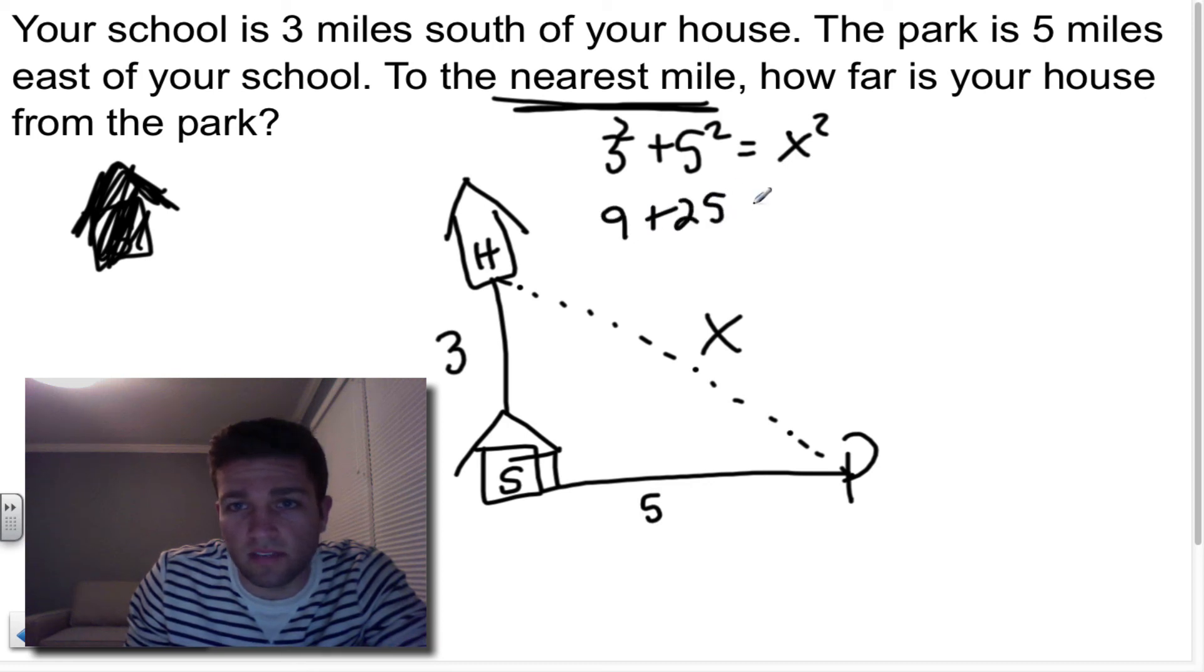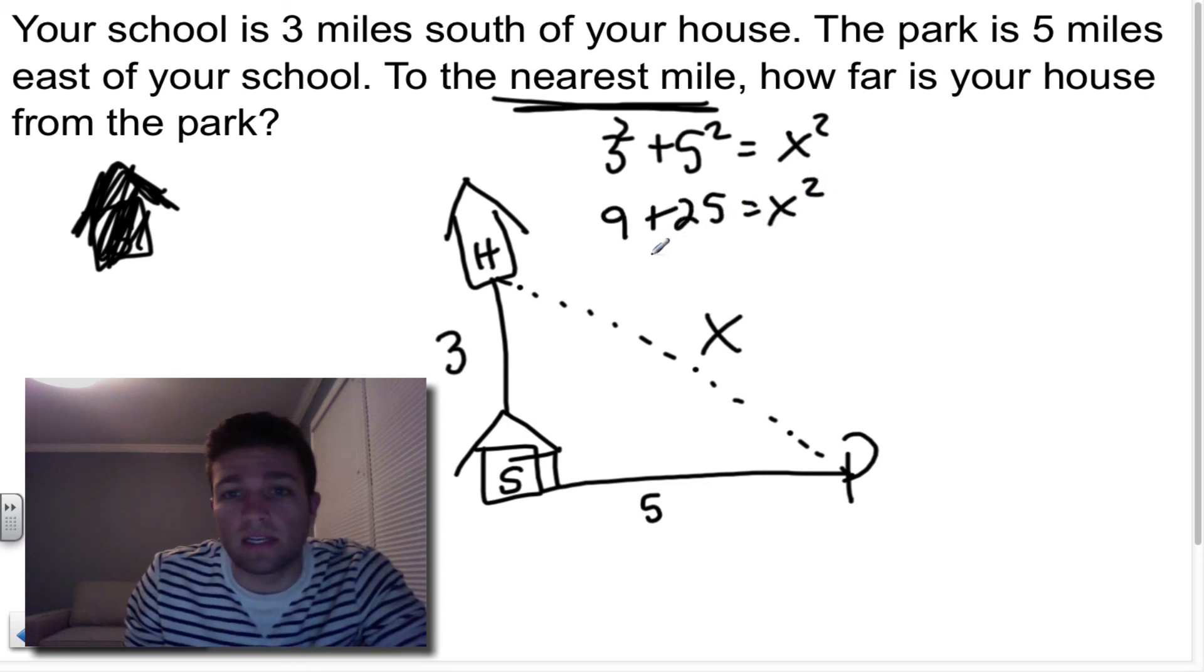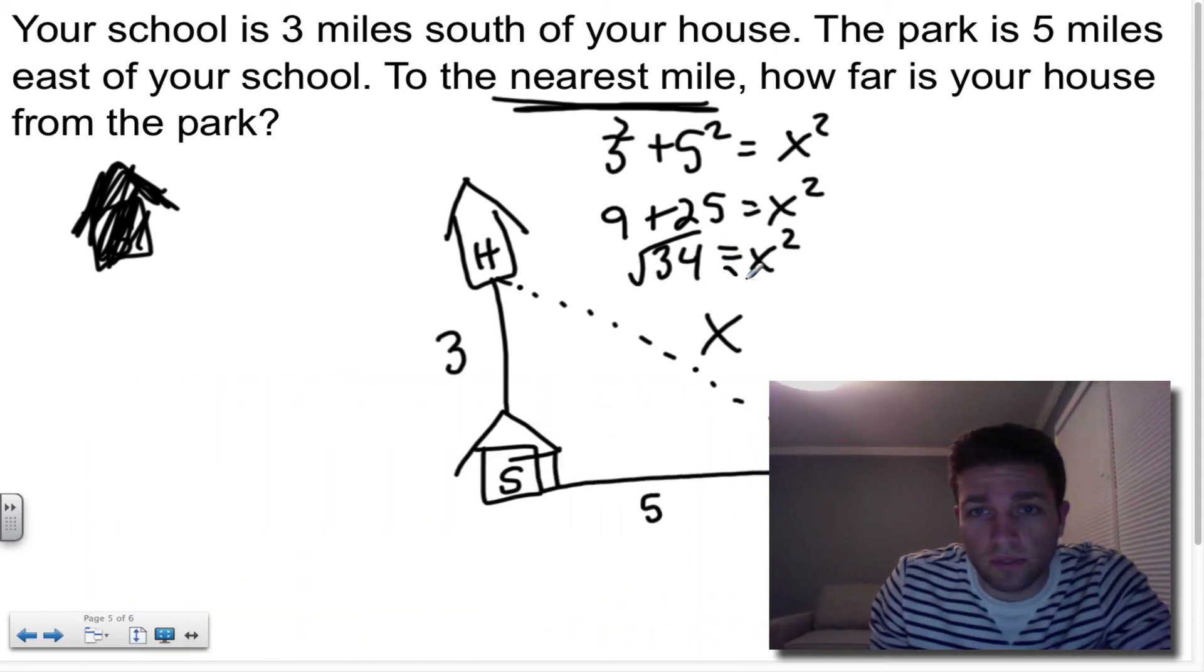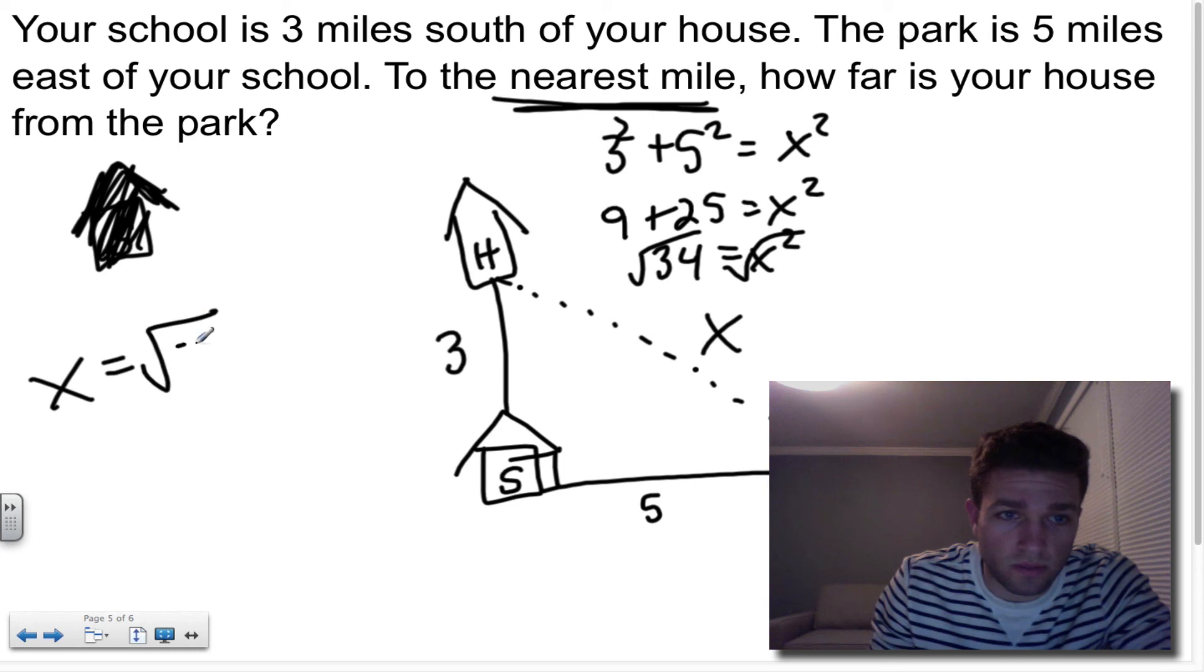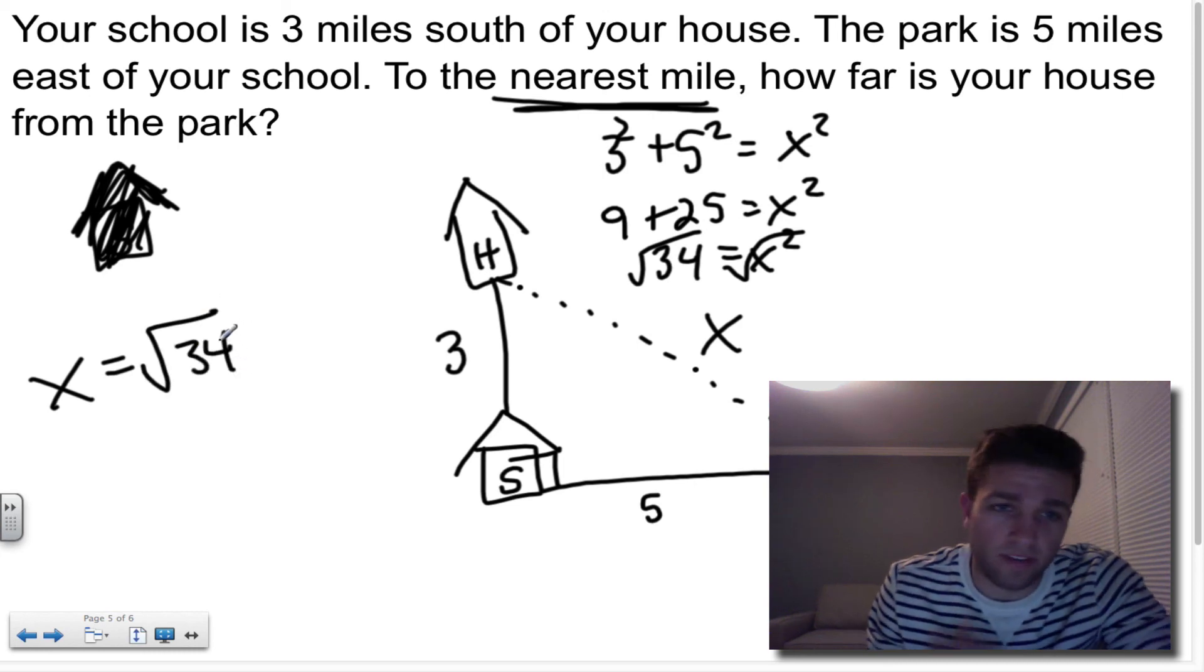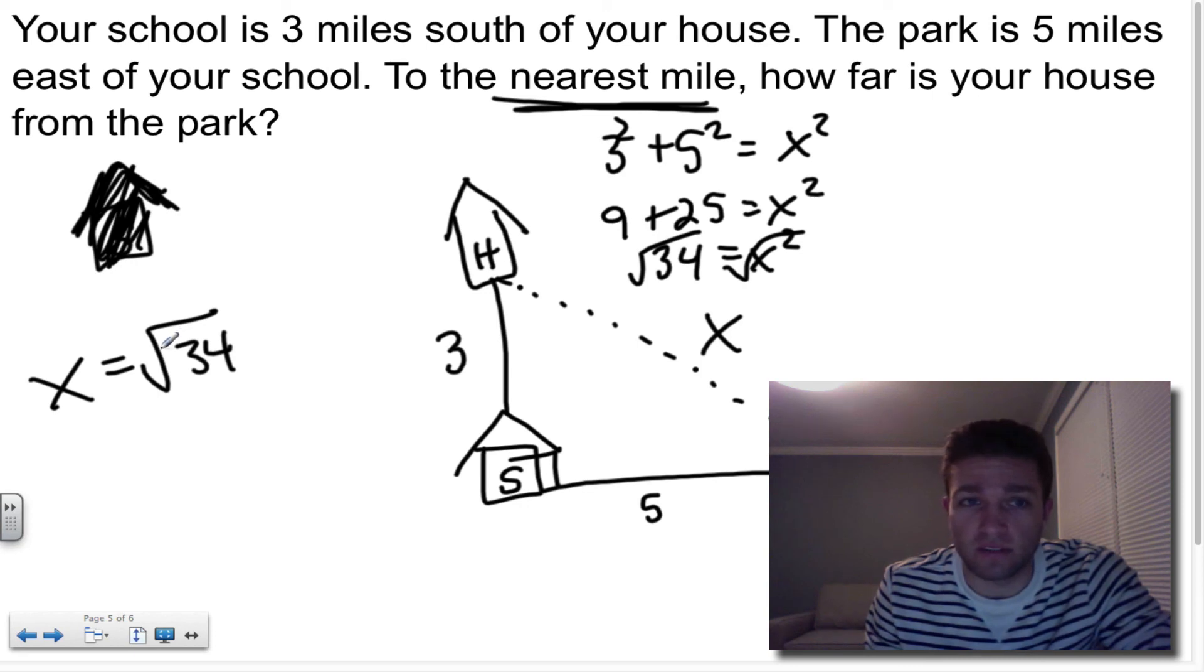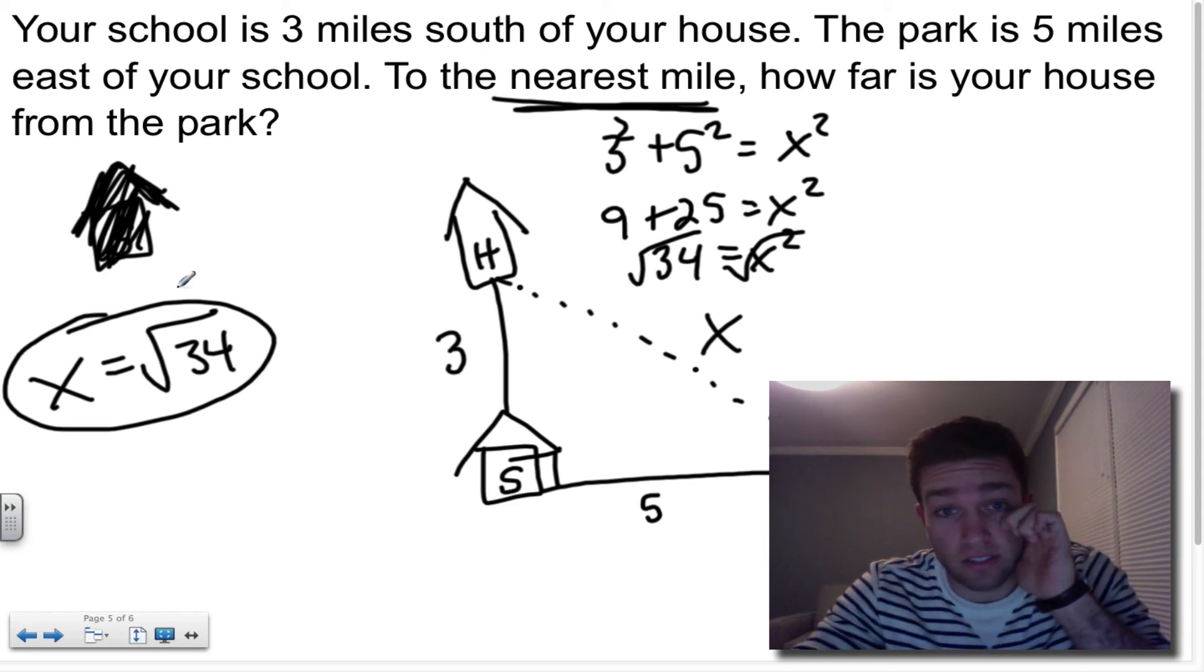So I'm going to use Pythagorean's theorem because this would be the right angle. Three squared plus five squared equals x squared. 9 plus 25 is 34. And if you square root both sides, you're going to get x is equal to the square root of 34, which is five point something. Round it to the nearest mile. And then that's it. That's today's lesson in a nutshell.